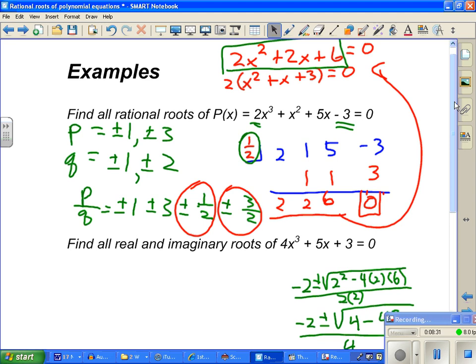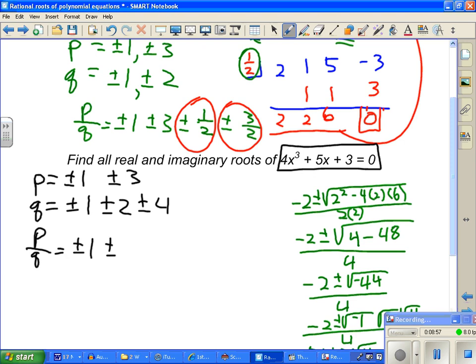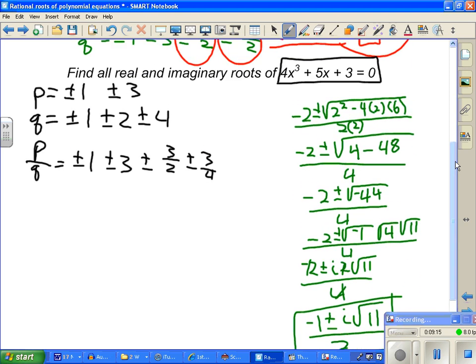One more example here. There's my equation. So factors of P, which is the constant term. Plus or minus 1, plus or minus 3. Factors of Q. Plus or minus 1, plus or minus 2, plus or minus 4. P over Q: plus or minus 1, plus or minus 3, plus or minus 3 halves, plus or minus 3 fourths.